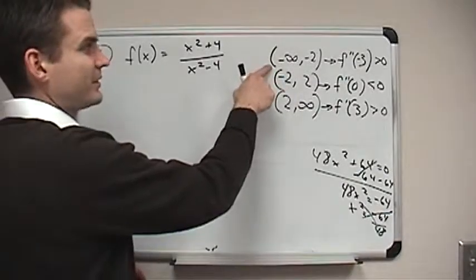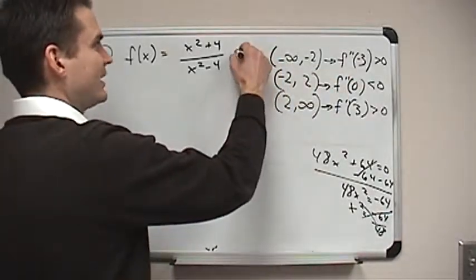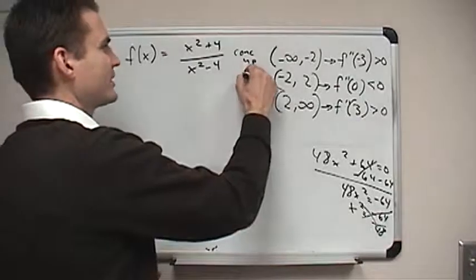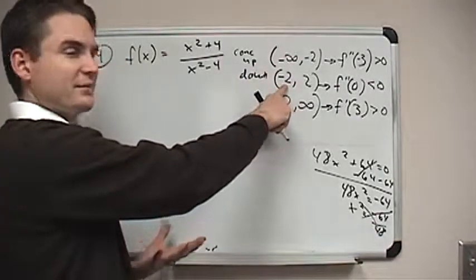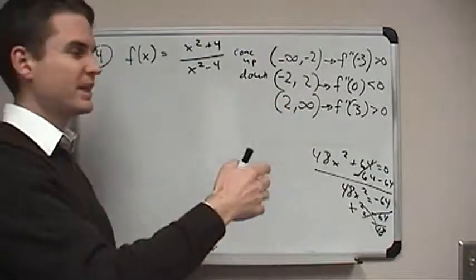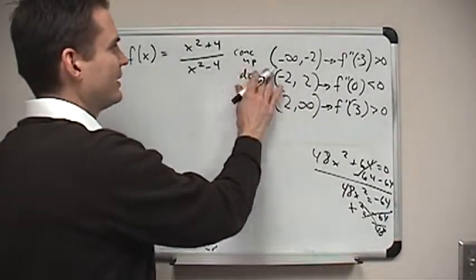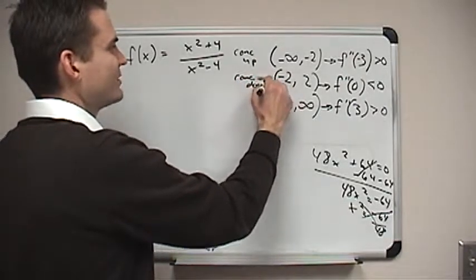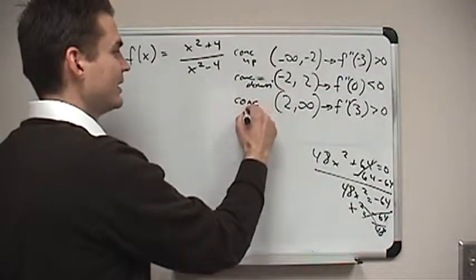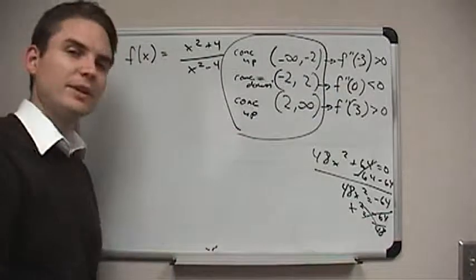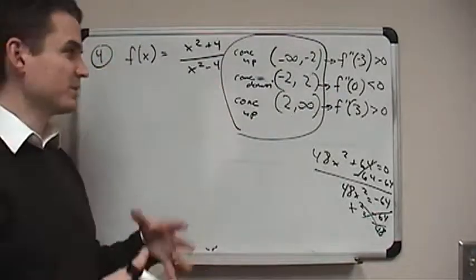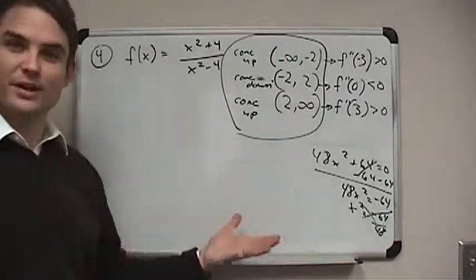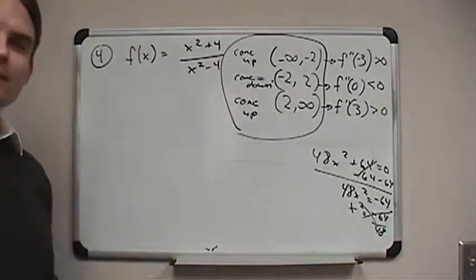Based on those results, we can answer the concavity question. On the interval from negative infinity to negative 2, since the second derivative is positive, the function is concave up. Between negative 2 and positive 2, the function is concave down. And from 2 to infinity, the function is concave up again. If you graph this function, you should see that on these three different intervals the concavity is: concave up, then concave down, then concave up.